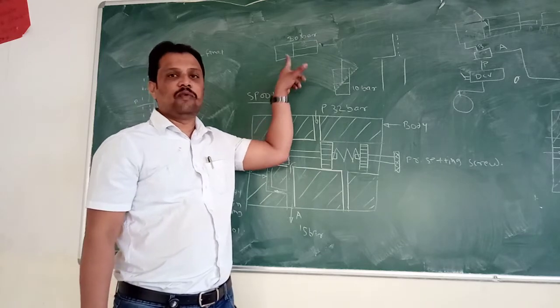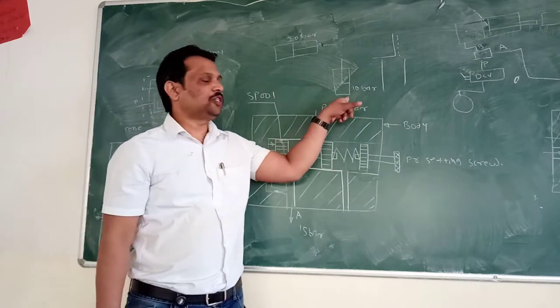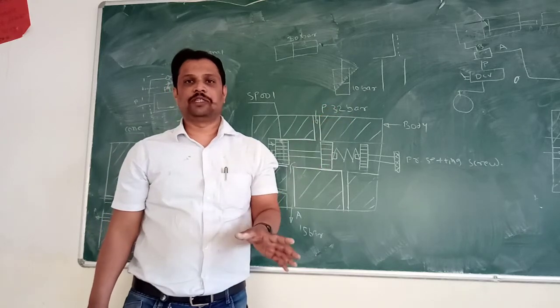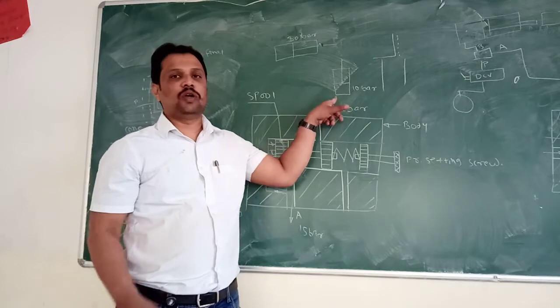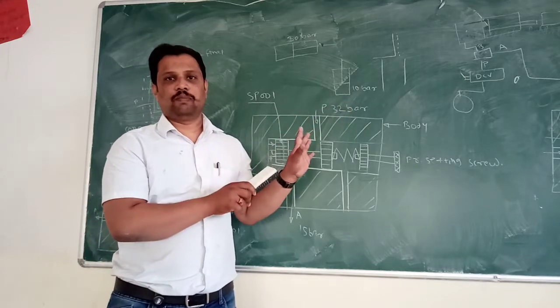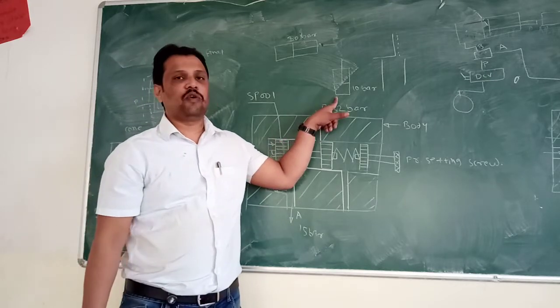In the system, in the hydraulic system, one actuator is of 30 bar pressure and another actuator is 10 bar pressure. Then you can't operate this actuator on the same prime mover.